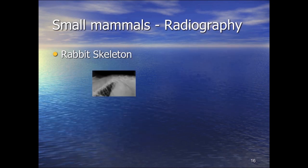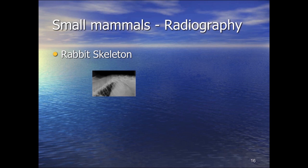Regarding fractures, dislocations and subluxations — the thoracolumbar area is particularly important for subluxations. This case shows a subluxation with a compression fracture in a thoracic vertebra, with vertebrae meeting at a very acute angle. This is typical in rabbits that are dropped or have poor bone and muscle strength. With paresis and paralysis of the hindquarters, this area is one of the key sites for subluxation and compression fractures.